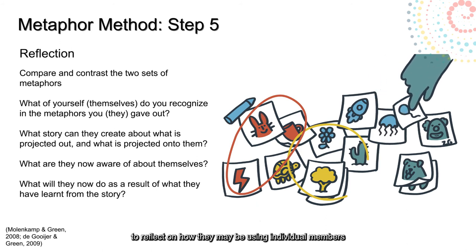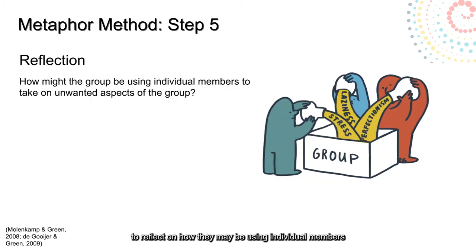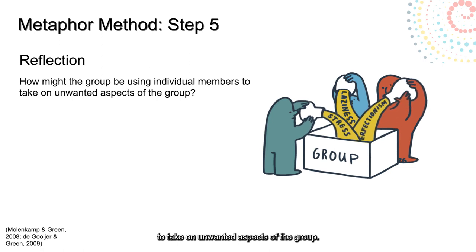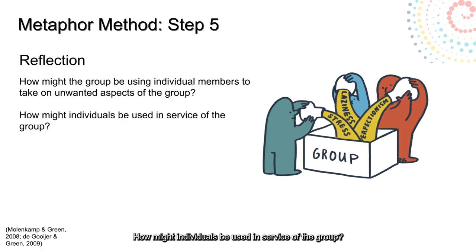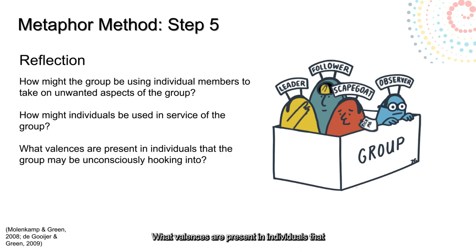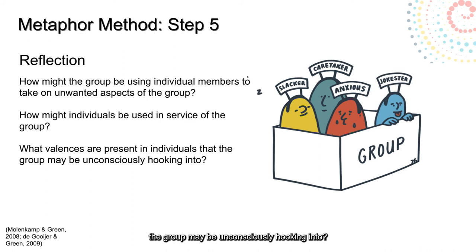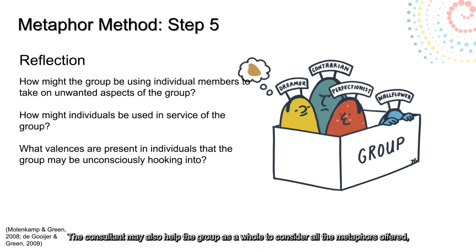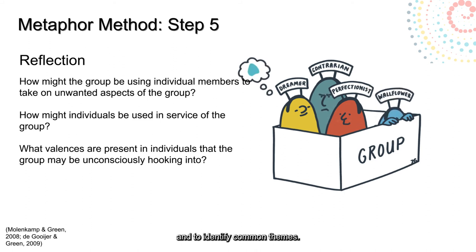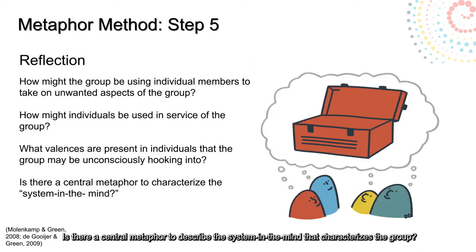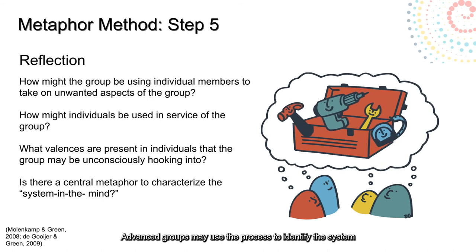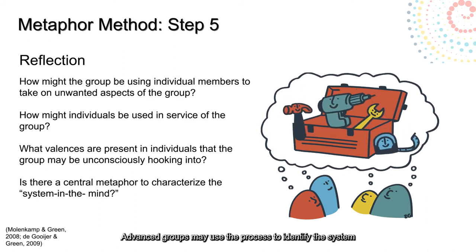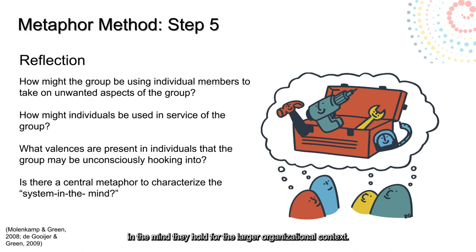When everyone has shared their reflections, invite the group to reflect on how they might be using individual members to take on unwanted aspects of the group. How might individuals be used in service of the group? What valences are present in individuals that the group may be unconsciously hooking into? The consultant may also help the group as a whole to consider all the metaphors offered and to identify common themes. Is there a central metaphor to describe the system in the mind that characterizes the group? Advanced groups may use the process to identify the system in the mind they hold for the larger organizational context.